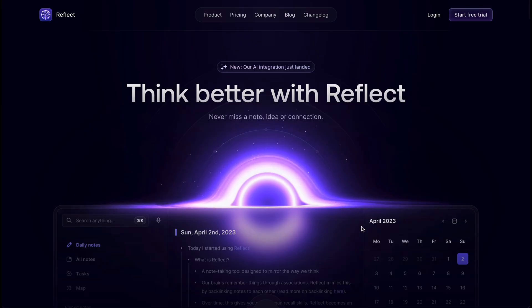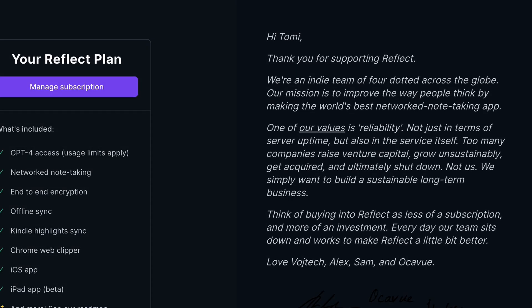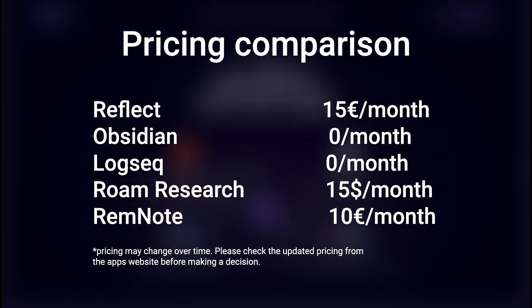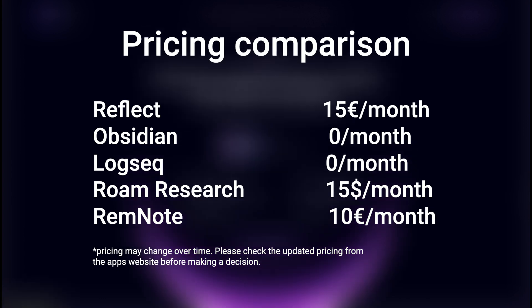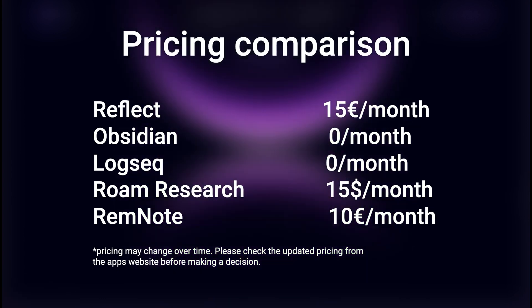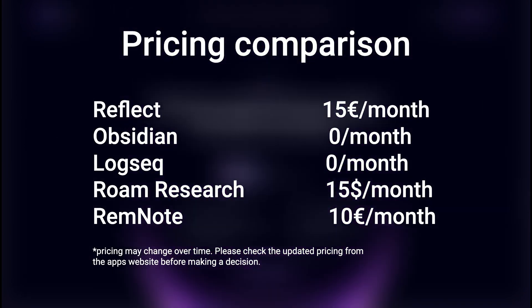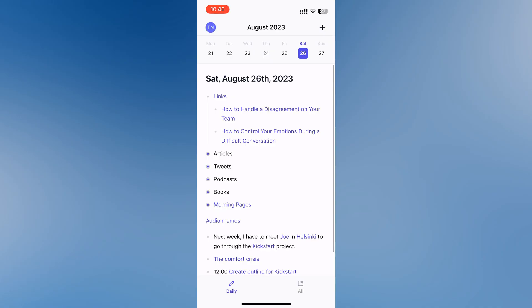Reflect is definitely on the pricier side. I appreciate their message when you click to subscribe that they are a small independent team — it makes me more inclined to support them. Reflect comes in at $15 per month. For comparison, Obsidian and Logseq are completely free, Roam Research matches Reflect's pricing at $15 a month, and Remnote's price is slightly lower at $10 a month. It's essential to weigh these costs against the features each platform provides to determine the best value for your needs.